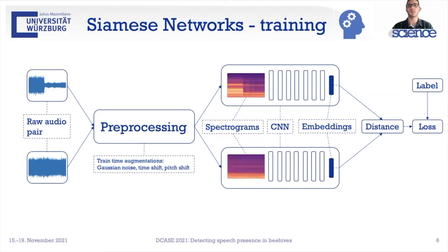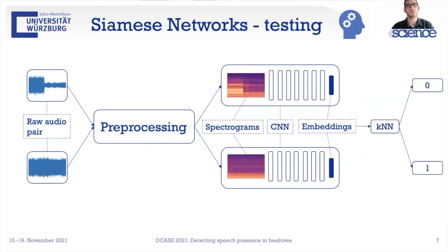These embeddings are then used to calculate the distance between them. The label is zero if the pair is from the same class, and one if the samples are from different classes. We then train the network to minimize the distance to zero for pairs from the same class and otherwise to maximize the distance. During test time we use the embeddings obtained for test data, feed them to a KNN, and let the KNN predict the class for the test sample.